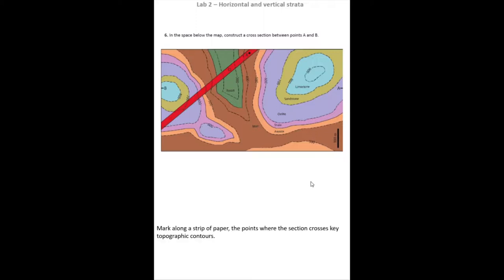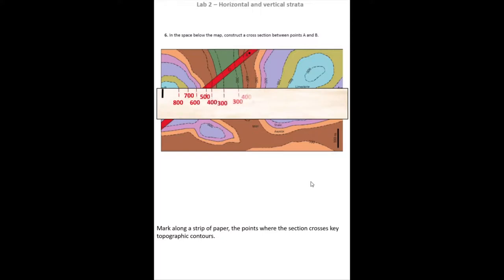So the first thing that we do is take our strip of paper, our cross-section strip, and we mark along the start and end of our cross-section and then mark on everywhere that we cross one of these contours. So here we've crossed the 800 meter contour, here the 700, and I've marked on those positions on my strip.